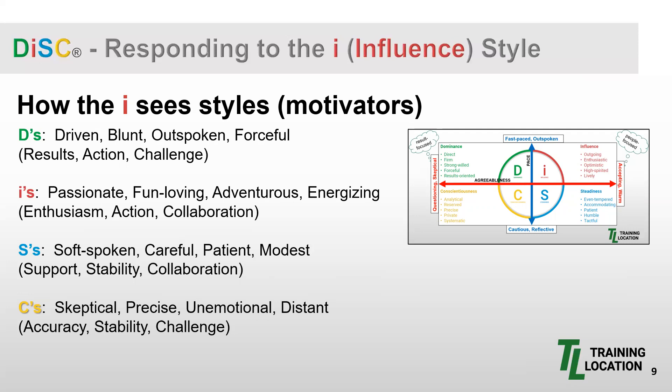If our I observes your behavior and begins to understand more about you, this can help tremendously with your interactions. For example, if an S knows about themselves and also knows how an I likes to be approached, with a little stretch the S will be able to respond to the I more effectively. In all fairness, the best interaction occurs when each style reaches toward the other with acceptance, understanding, and a desire for mutual communication success.